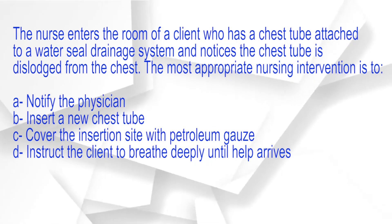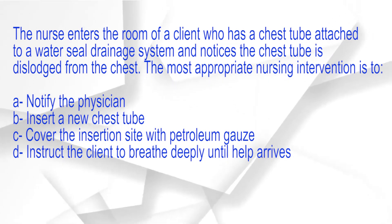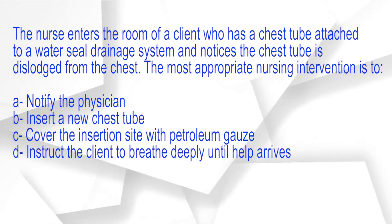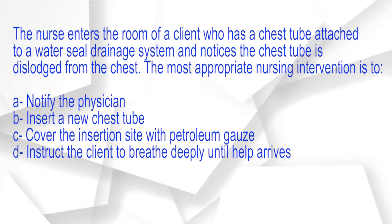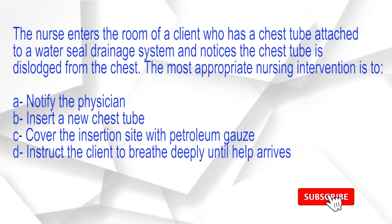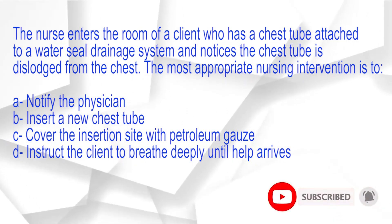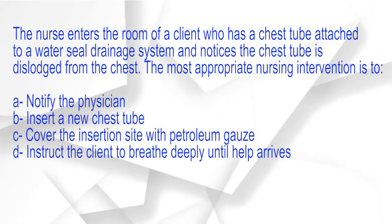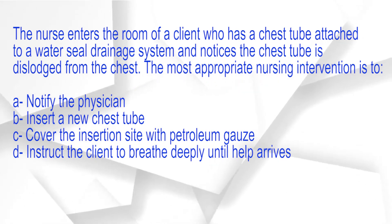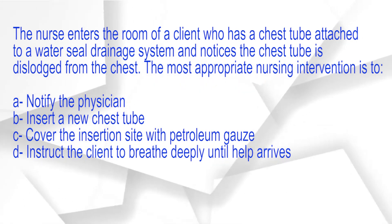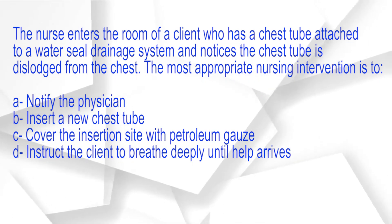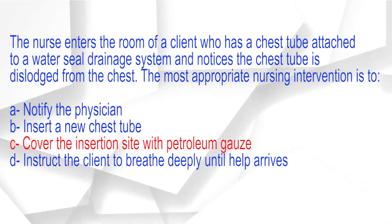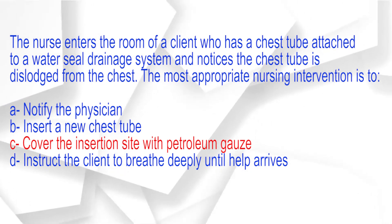The nurse enters the room of a client who has a chest tube attached to a water seal drainage system and notices the chest tube is dislodged from the chest. The most appropriate nursing intervention is to: A. Notify the physician. B. Insert a new chest tube. C. Cover the insertion site with petroleum gauze. D. Instruct the client to breathe deeply until help arrives. The correct answer is option C: Cover the insertion site with petroleum gauze.